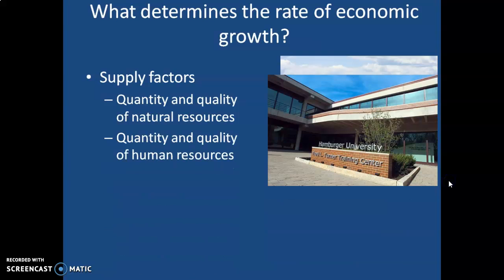The quantity and quality of human resources is also important — that relates to education. We want a highly skilled and educated workforce. Here is a picture of Hamburger University, a real place in Oak Brook, Illinois, owned by McDonald's. McDonald's puts a great deal of emphasis on training the people who will run a McDonald's restaurant. It's not just traditional universities — many large American corporations put a lot of emphasis on the ongoing training of their workforce.